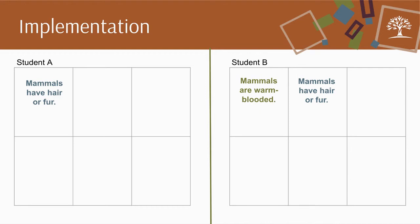Then the partnership swaps roles and Student B gives one piece of new information to Student A. At the end of this swap, both students have given information and have also received new information.